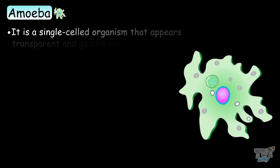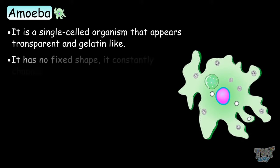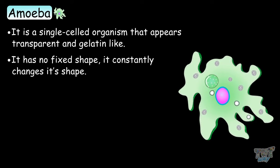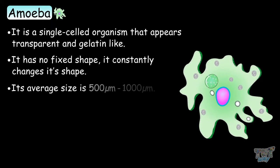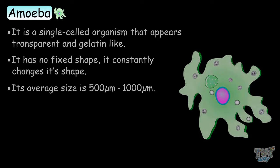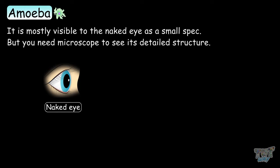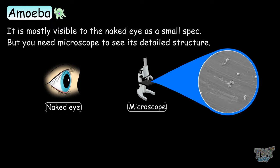It is a single-celled organism that appears transparent and gelatin-like. It has no fixed shape and it constantly changes its shape. Its average size is 500 micrometers to 1000 micrometers. It is mostly visible to the naked eye as a small speck, but you will need a microscope to see its detailed structure.